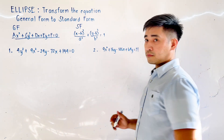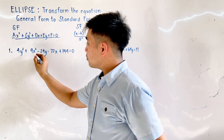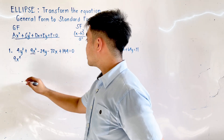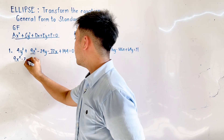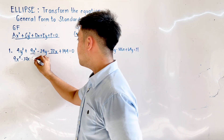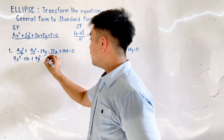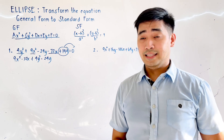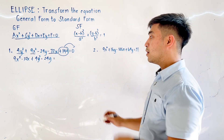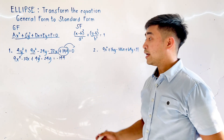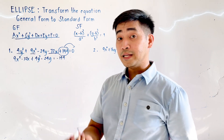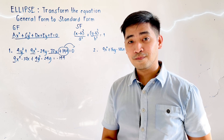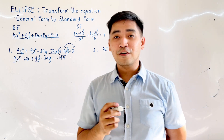So what are we going to do? We will arrange this first — group all the variables with x and all the variables with y. That becomes 9x² − 72x, then plus 4y² − 24y, and transfer all the constants to the right side. Since this is positive 144, it becomes negative 144. Now we need to complete the square, but first, remember there are coefficients of x² and y². We need to factor out those coefficients.